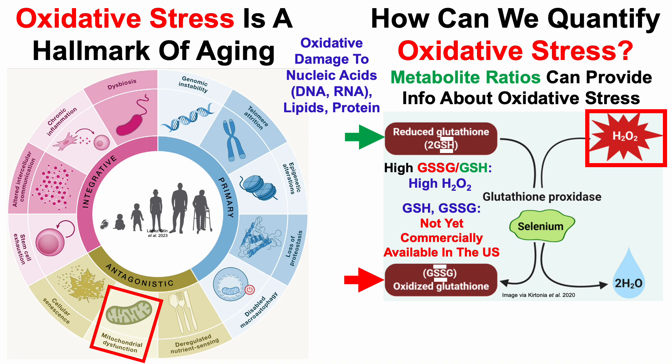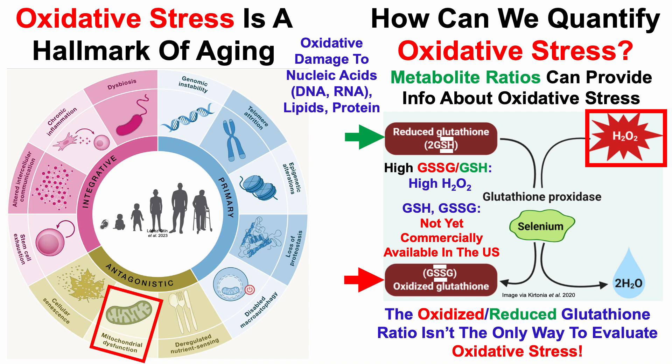Unfortunately, GSH and GSSG individually are not yet commercially available in the United States. We can measure total levels of glutathione, but that doesn't tell us about the ratio between reduced and oxidized. The good news is the oxidized to reduced glutathione ratio isn't the only way to evaluate oxidative stress, especially when using metabolite ratios.